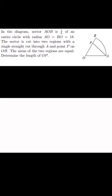In this question, we take one-sixth of a circle with radius 18 and make a cut from A to P such that the two regions have equal area. Can we determine the length of line OP?